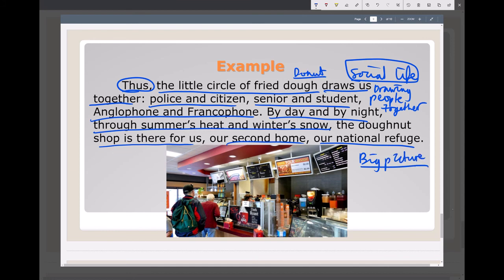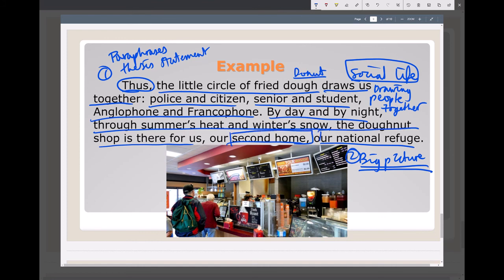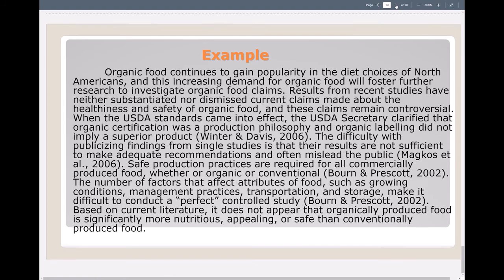Notice that the first sentence paraphrases or rephrases the thesis statement. The second sentence adds to that thesis by painting a picture — making an image of what the donut shop is like to Canadians: a second home, a national refuge that is there for you.